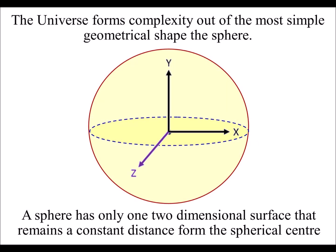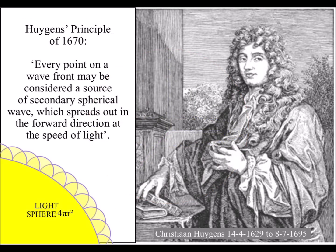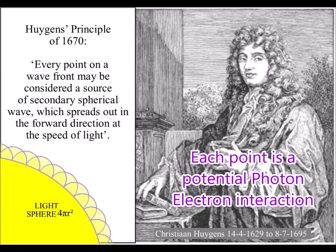The universe forms complexity out of the most simple geometrical shape, the sphere. All we need is spherical geometry to arise naturally in the universe, and we have this in Huygens' Principle of 1670 that says, Hence, every point on a wavefront has the potential for a new spherical wave.